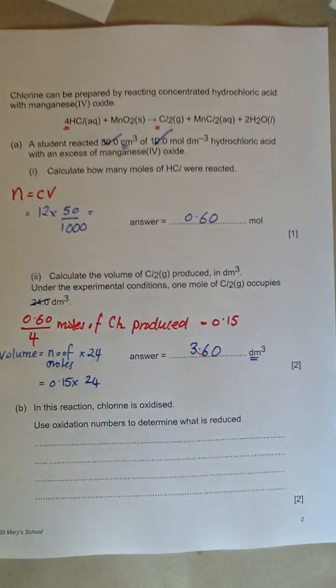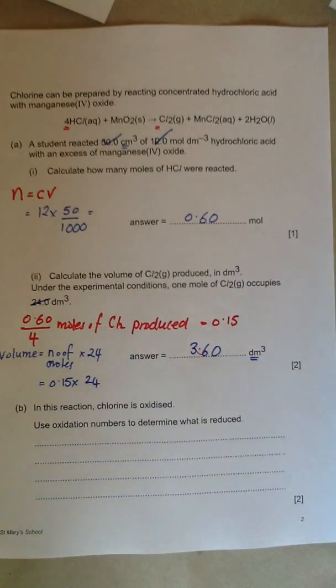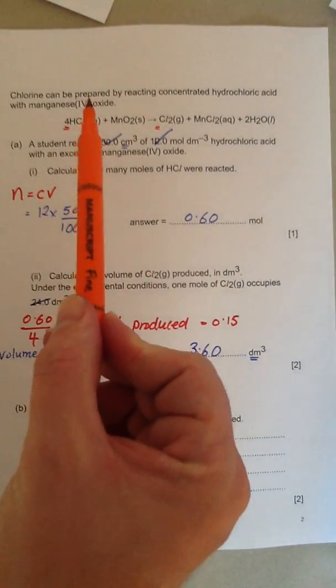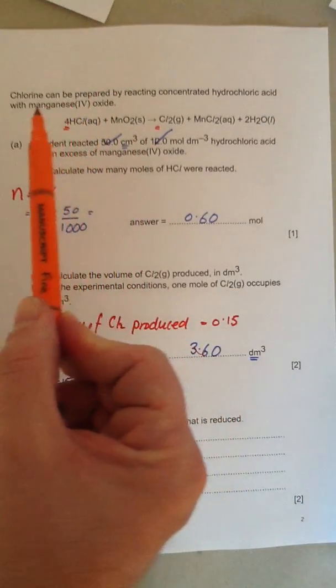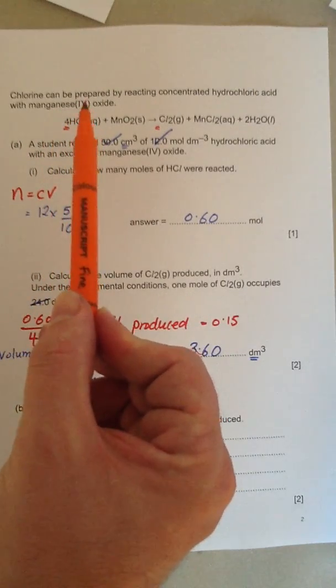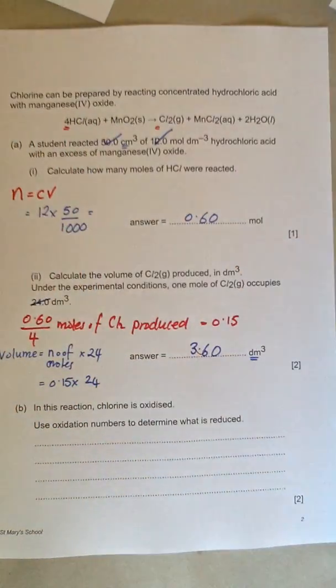In the final part it says, in this reaction, chlorine is oxidized. Use oxidation numbers to determine what is reduced. So if you get a bit stuck in the exam and you get a bit puzzled, if that's got an oxidation state, the thing with the oxidation state, manganese 4 oxide, that's probably going to be the thing that is oxidized or reduced. So let's look at it.